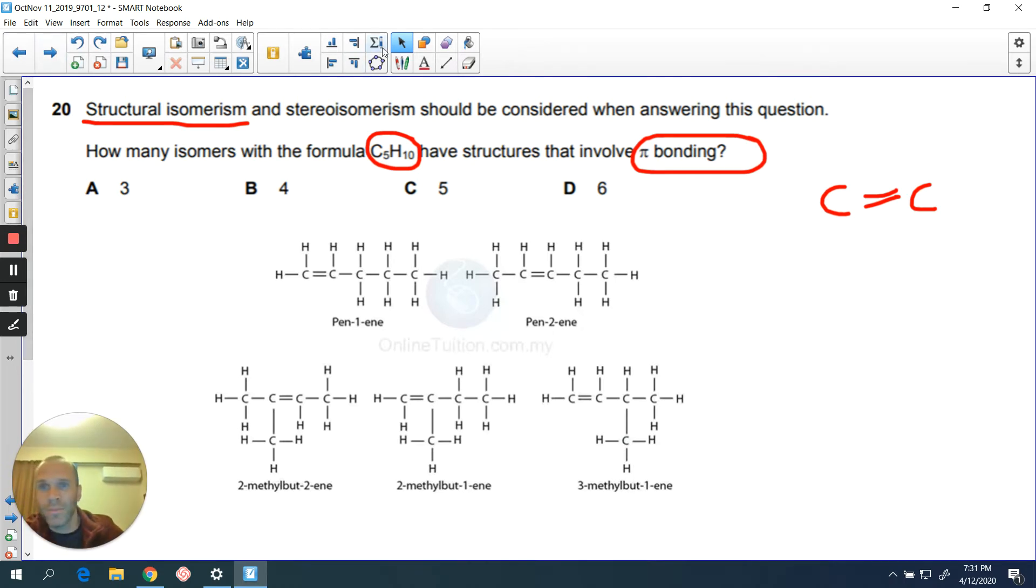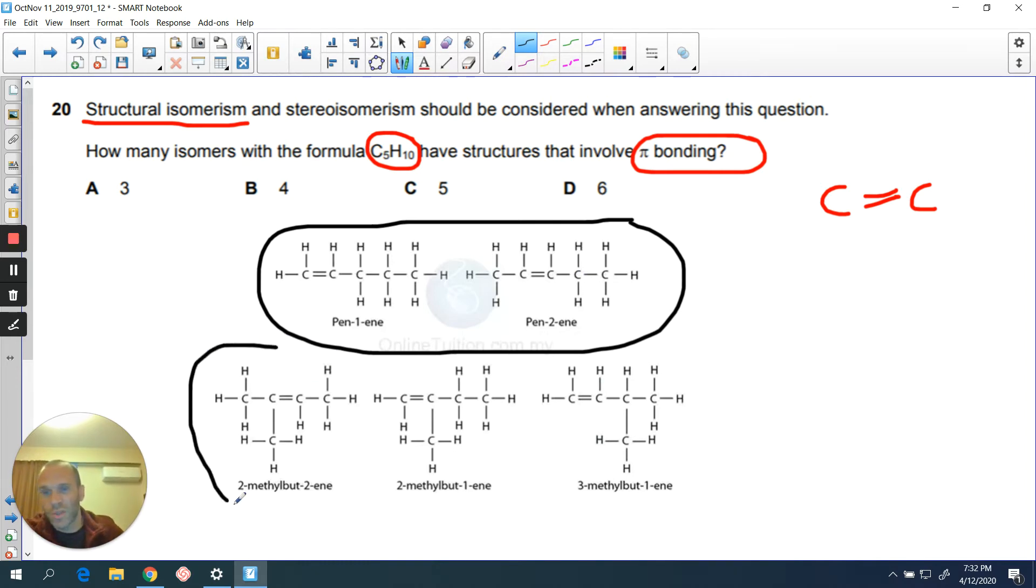Now we've got here two isomers that are position isomers. In other words, you've got the functional group in different points in this straight chain. And then we've got these types of isomers would be known as chain isomers because you've got a changing of the branching in the chain. So we've got one, two, three, four, five so far.